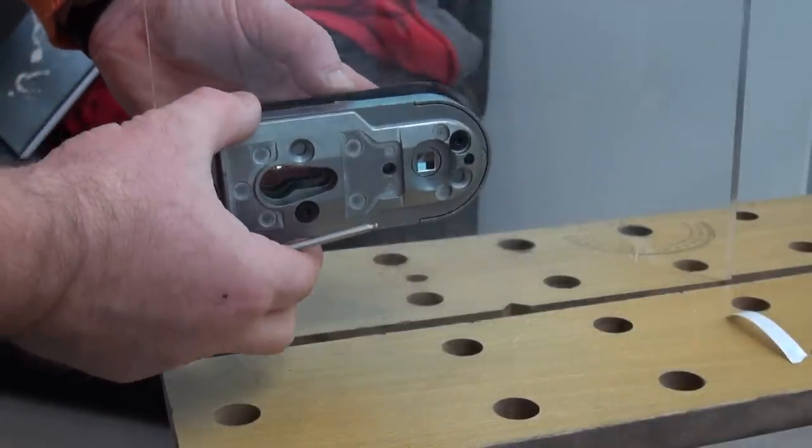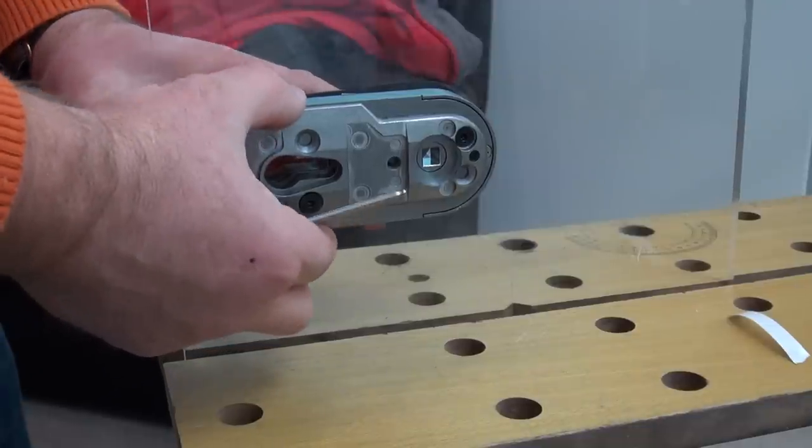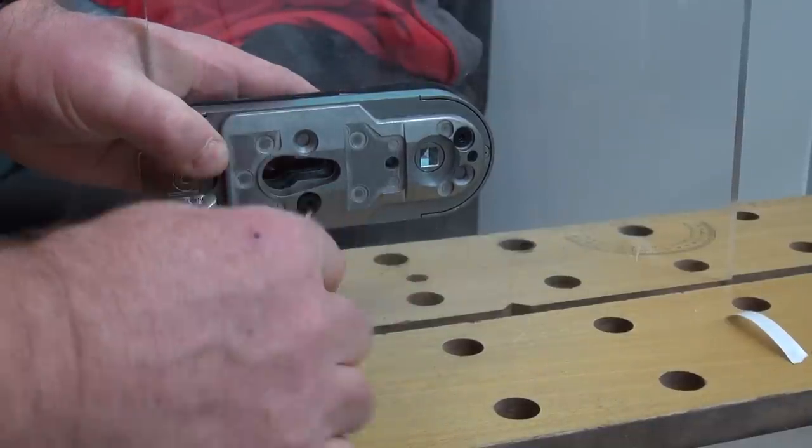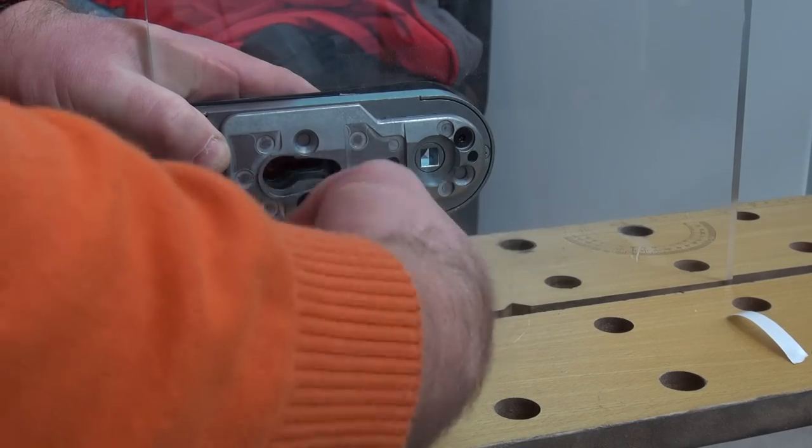Once it's in the loose position, you can see there's a bit of movement in the holes. You can then line this through with the front of the door. Once you're satisfied that it's level and it's square with the front, you can then tighten the two screws up.